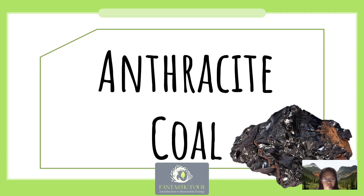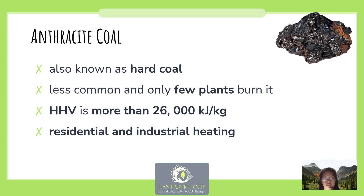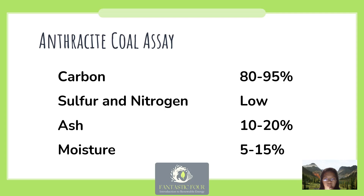The next type is anthracite coal, also known as hard coal. It is less common and only a few power plants use it. The higher heating value is more than 26,000 kilojoules per kilogram, and it is usually used in residential and industrial heating. Its carbon content ranges from 80 to 95 percent, sulfur and nitrogen content is low, ash content is 10 to 20 percent, and moisture is 5 to 15 percent.